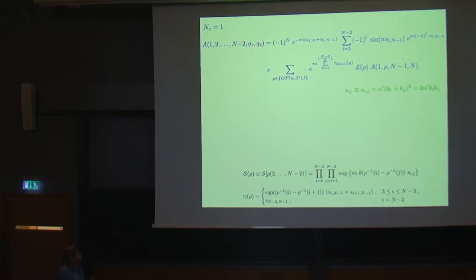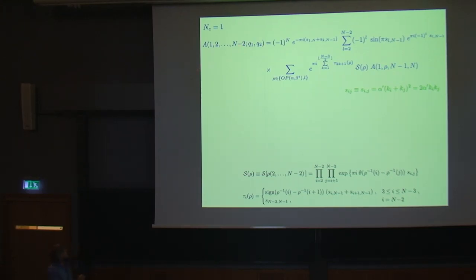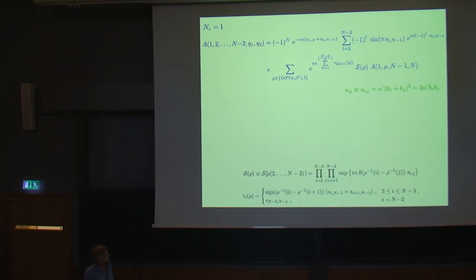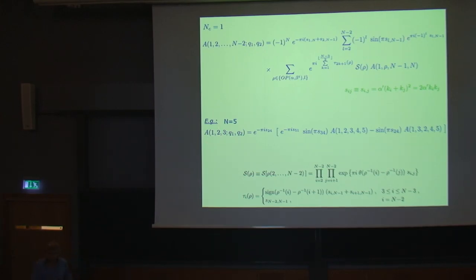To exemplify, consider the simplest case: just one closed string with different left and right moving momenta. The result involves phase factors — exponentials — and the key point is that here we have the color-ordered open string amplitude. With n minus two open strings and one closed string, it reduces to a pure n-point open string amplitude. The key thing to remember is that we have some sine factors coming from the monodromies, and this open string amplitude.